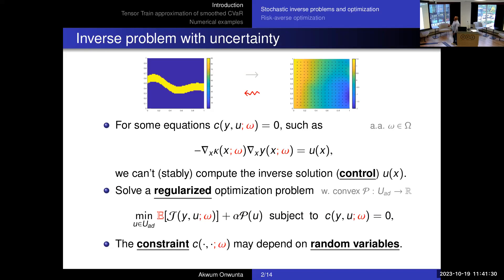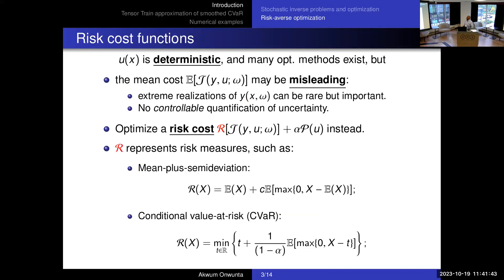We will focus on: first, smoothed ReLU to deal with the non-smoothness; and second, tensor product approximation — specifically TT approximation — to deal with the curse of dimensionality with respect to the random variables. This could also be tackled using Gaussian processes, neural networks, or sparse grids, but we haven't seen this in the framework of risk-averse optimization.